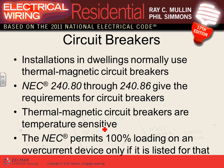Since we're doing dwellings, in residential the most common overcurrent protection device we use is called thermomagnetic circuit breakers. There are different types of circuit breakers — electronic circuit breakers and thermomagnetic circuit breakers — based on how they sense an overcurrent condition and trip.